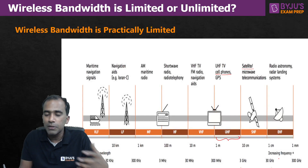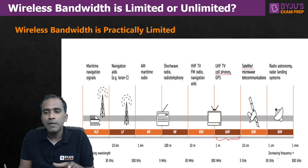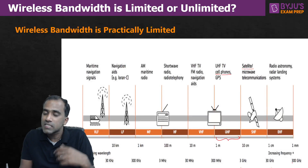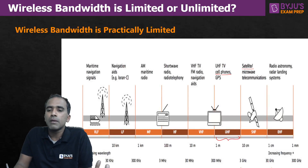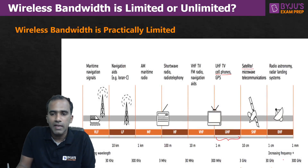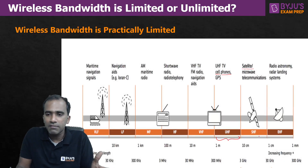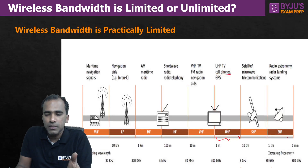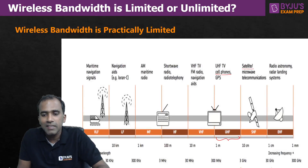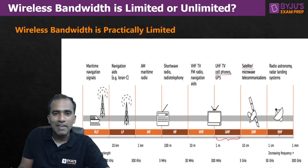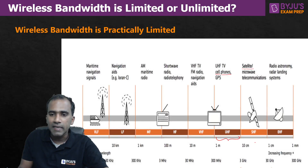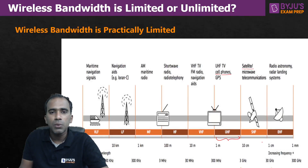Maybe in the future we might be able to communicate in the 30 GHz to 300 GHz range, but currently we don't have the right equipment to operate above 30 GHz for large data transmission. So practically speaking, we are able to communicate only below 30 GHz, which means our wireless bandwidth is practically only 30 GHz — not more than that.